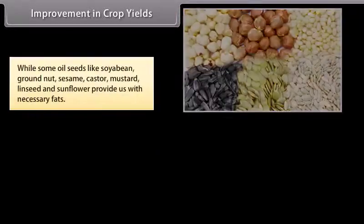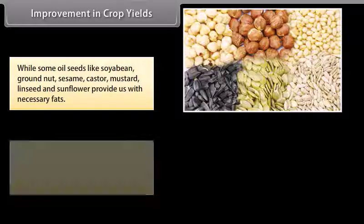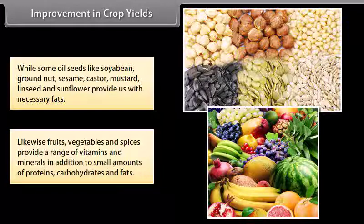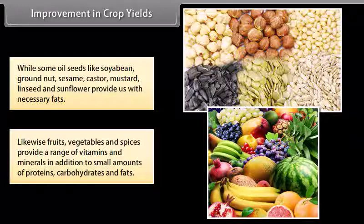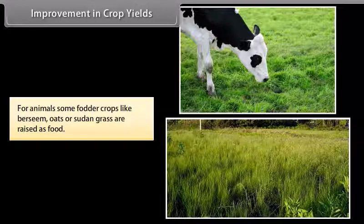Some oil seeds like soybean, groundnut, sesame, castor, mustard, linseed and sunflower provide us with necessary fats. Fruits, vegetables and spices provide a range of vitamins and minerals, in addition to small amounts of proteins, carbohydrates and fats. For animals, fodder crops like Bersim, oats or Sudan grass are raised as food.